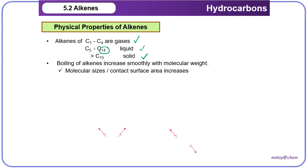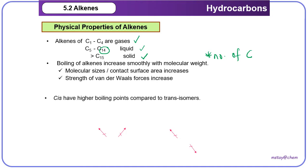The boiling point of alkene increases smoothly with molecular weight, which relates to molecular size. As molecular size increases, the contact surface area also increases. We don't need to calculate the relative molecular mass — we focus on the number of carbons — but you are encouraged to write down the molecular weight in your explanation. Due to larger molecular size and contact surface area, the strength of Van der Waals force becomes stronger, and hence more energy is needed to overcome the intermolecular force, so boiling point increases with number of carbons.